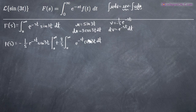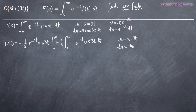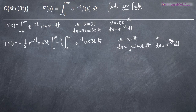Now we have the integral of e to the negative st times cosine of 3t, and we haven't made a lot of progress — we're going to need to use integration by parts again. This time we'll set u equal to cosine of 3t, and take its derivative: it's going to be negative 3 sine of 3t, because the derivative of cosine is negative sine. Then dv is e to the negative st dt, and integrating that to find v gives us the same result as before: negative 1 over s times e to the negative st.